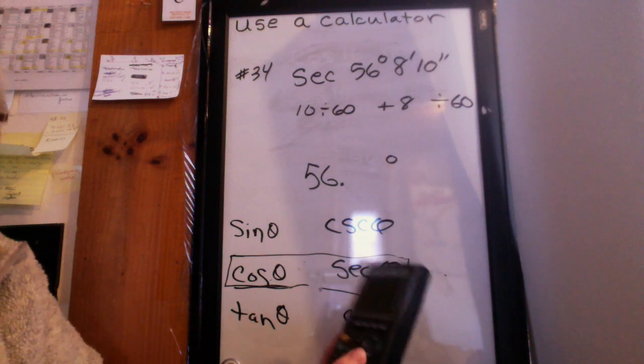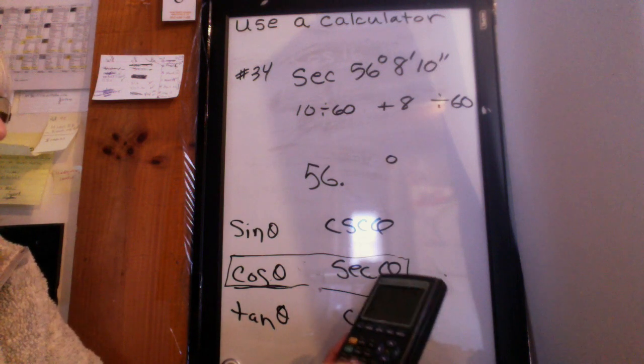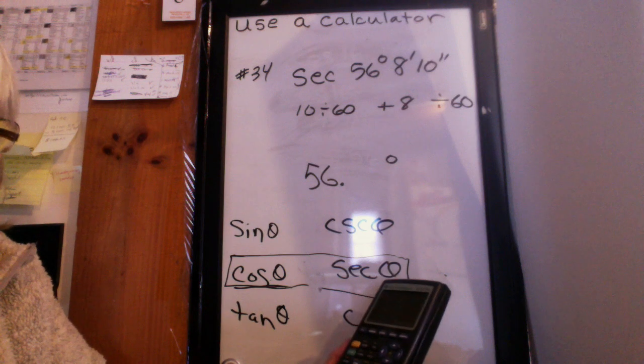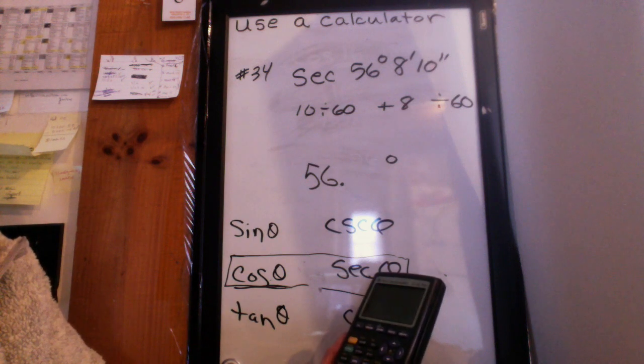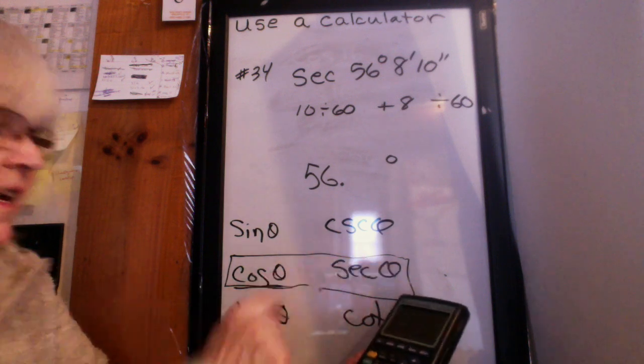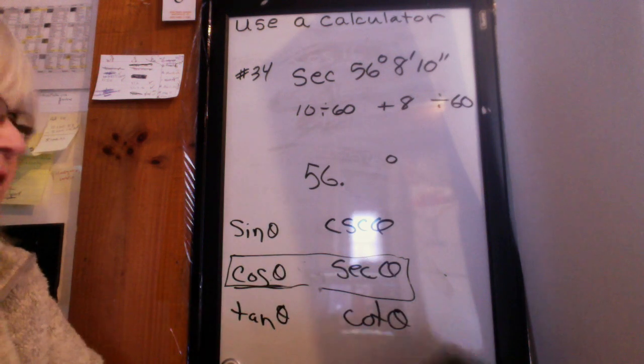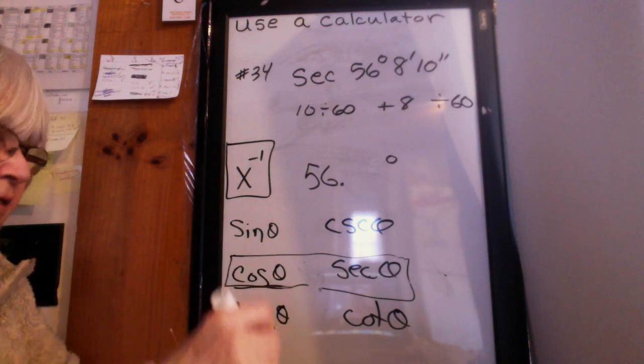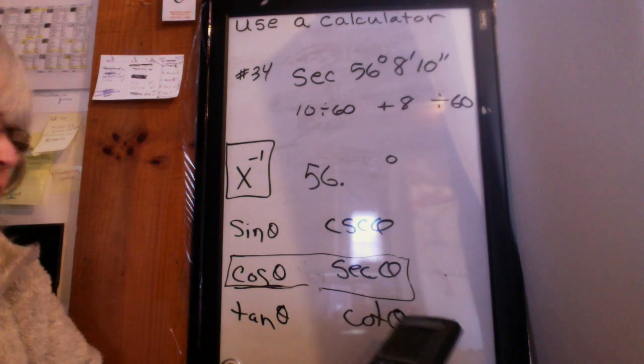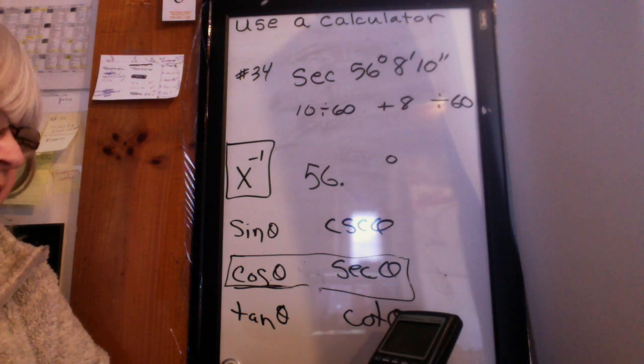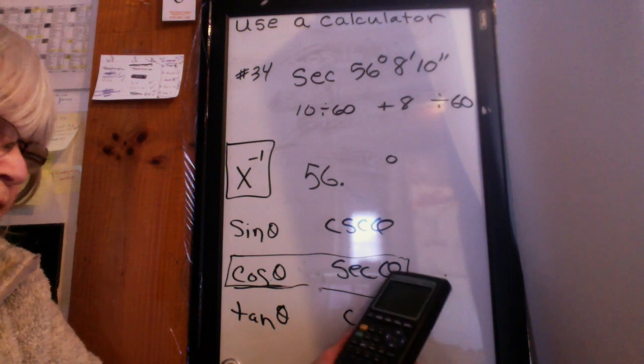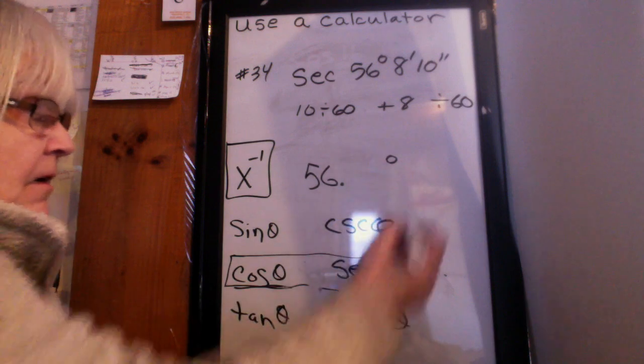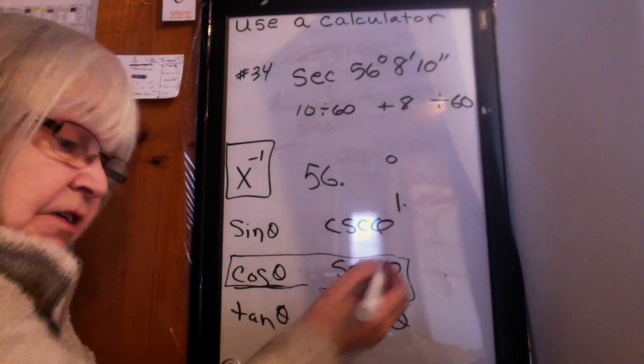So we're going to do cosine, and we've got this in our calculator. So cosine, second answer, and hit enter. You'll get your answer. But I don't want the cosine, I want the secant, so I have to take the reciprocal of that. Well, there's a little button on your calculator that will do the reciprocal. It's the x^-1 key. So see if you can find that key and do that key next to the answer, and it will flip it over for you.